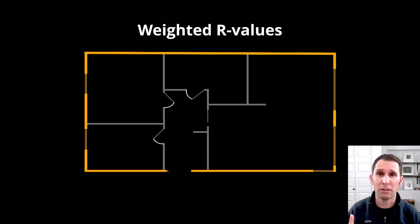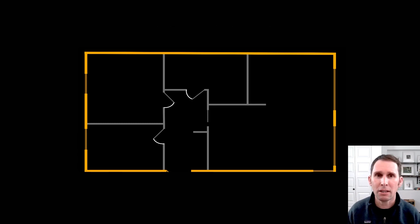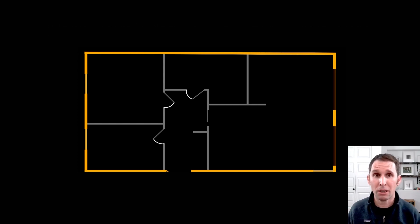So, now we're going to talk about a very interesting concept, which is weighted R-values. What does that mean? Well, sometimes different surfaces have different levels of R-value. How do you figure out how everything works together? Do you just average it? Well, you can't do that because heat travels the path of least resistance. Let me show you what I mean.